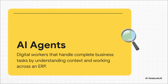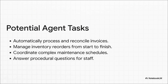That's exactly what an AI agent is — think of it as a digital employee that can handle entire business tasks from start to finish. Because it's connected to Odoo, it understands the context of your business and can automate workflows that jump between departments, like coordinating between sales, inventory, and accounting. Imagine an agent that automatically processes invoices as they come in, manages the entire inventory reorder process, or coordinates maintenance schedules with your suppliers. This isn't just automation — this is intelligent automation.